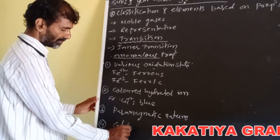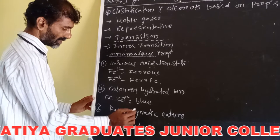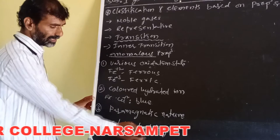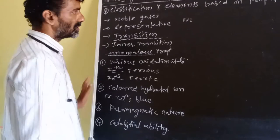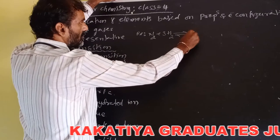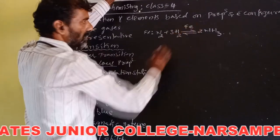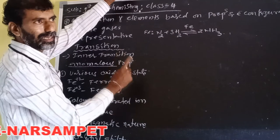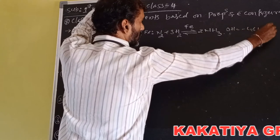Transition elements show catalytic ability. For example, in the Haber process: N₂ + 3H₂ gives rise to two moles of NH₃. Here, powdered iron can act as a catalyst. The ΔH is equal to minus 46.1 kilojoules per mole.